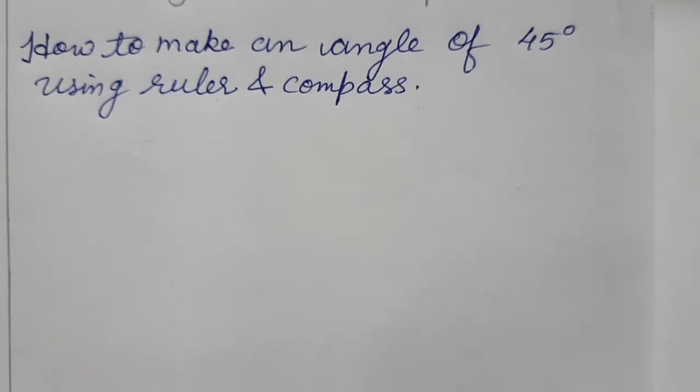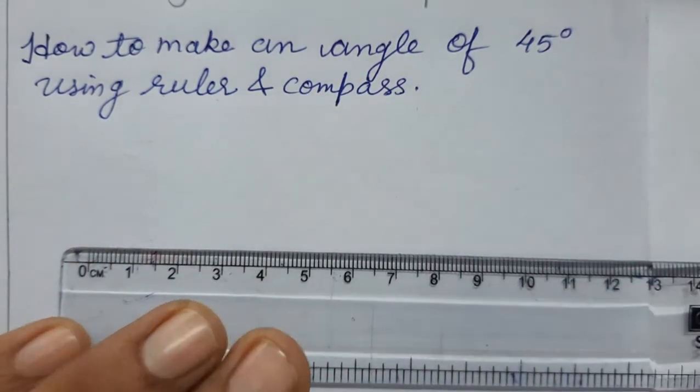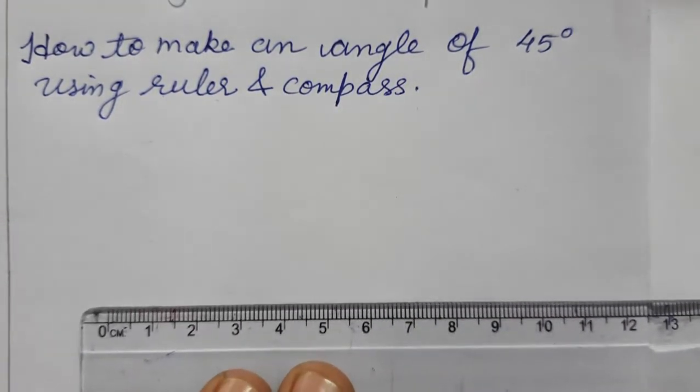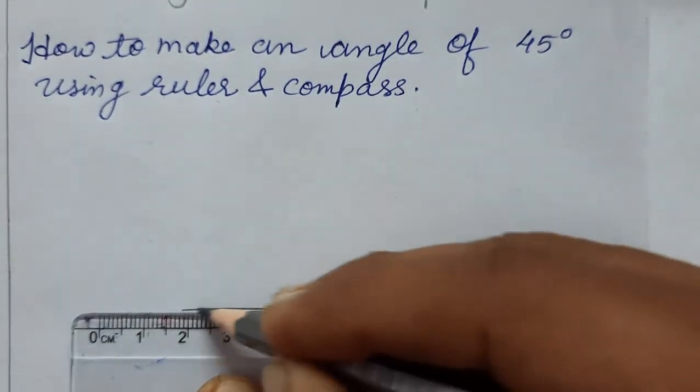You know that we will start with 60 degrees only. Our base is 60 degrees, always. So let's make... First of all we will make one line. So I have made one line like this.